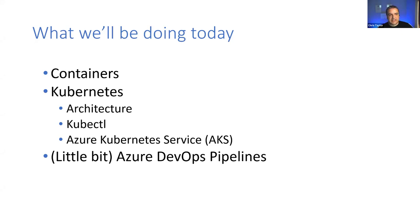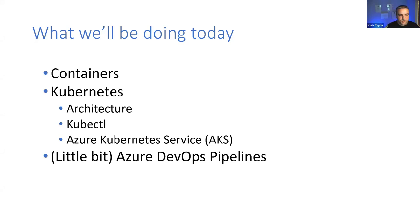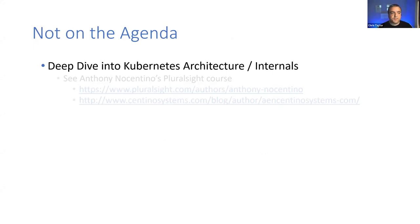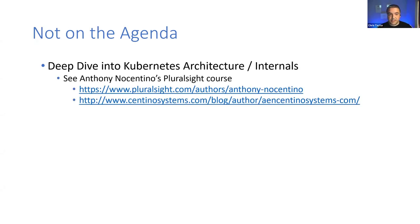What we'll be looking at today: we'll talk very briefly about containers — it's a one-slide thing — then move into Kubernetes, a little about the architecture, kubectl, focusing on Azure Kubernetes Service (AKS), and briefly touching on how we can use this with Azure DevOps pipelines. What we won't be going into is a real deep dive into the architecture and internals. I've given some links to Anthony Centino's Pluralsight course and blog where he does go into a real deep dive.